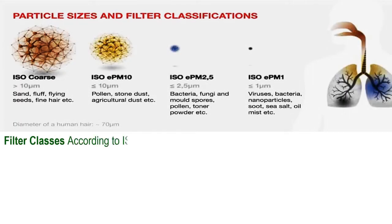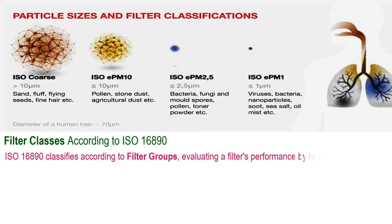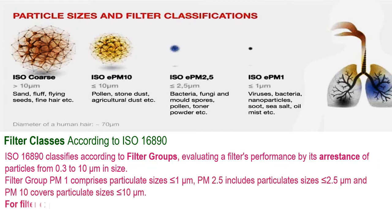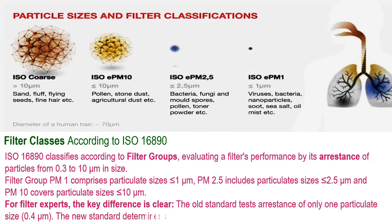Filter classes according to ISO 16890: ISO 16890 classifies according to filter groups, evaluating a filter's performance by its arrestance of particles from 0.3 to 10 micron in size. Filter group PM1 comprises particulate sizes less than or equal to 1 micron. PM2.5 includes particulate sizes less than or equal to 2.5 micron. And PM10 covers particulate sizes less than or equal to 10 micron. The old standard tests arrestance of only one particulate size — 0.4 micron — whereas the new standard determines arrestance over a spectrum of particulate sizes.